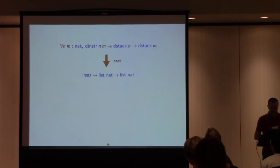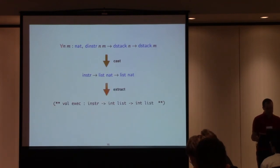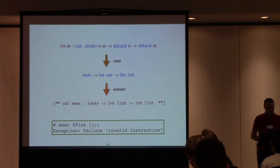So going back to the execution of instructions on the stack, you start with this function, you cast it with our operators to just a function that has type instruction list of net list of net, then you extract that, and when you try to execute plus on an empty stack you just get an exception instead of a segmentation fault, the error coming from the definition of the partial function to recompute indices.